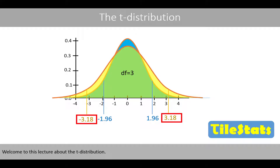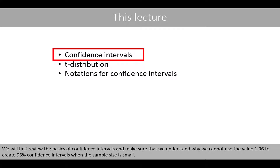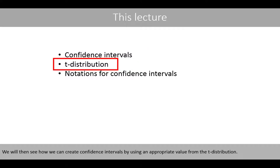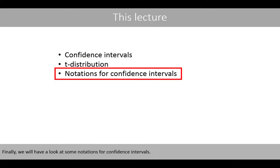Welcome to this lecture about the t-distribution. We'll first review the basics of confidence intervals and make sure that we understand why we cannot use the value 1.96 to create 95% confidence intervals when the sample size is small. We'll then see how we can create confidence intervals by using an appropriate value from the t-distribution. Finally, we'll have a look at some notations for confidence intervals.